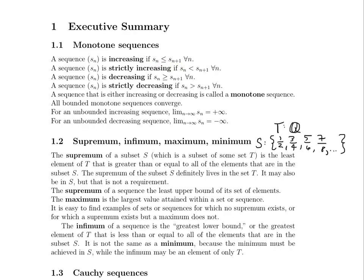The supremum of a sequence is also called the least upper bound of its set of elements. The maximum is the largest value actually attained within a set or sequence. It's easy to find examples of sets or sequences for which a supremum exists but a maximum does not, because a maximum must actually be achieved. In our example, 1 is the supremum, but 1 is never actually achieved by our subset S. If you pick any value achieved in S as a maximum, the very next term will be greater than it, so it can't be a maximum. This is a great example where there is a supremum — not in S but in T — but there is no maximum.